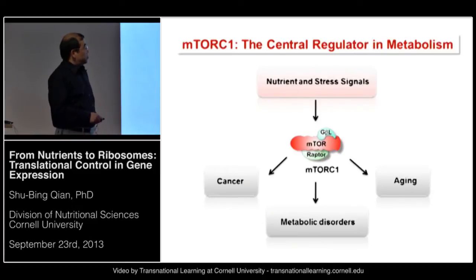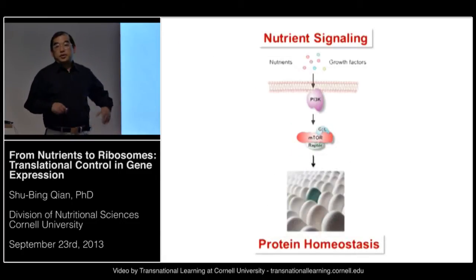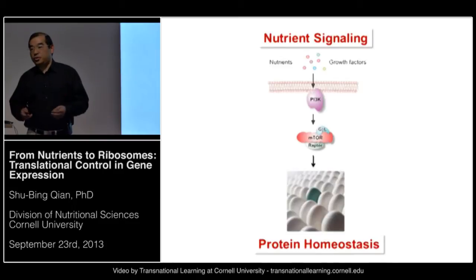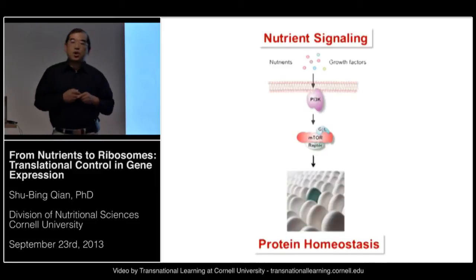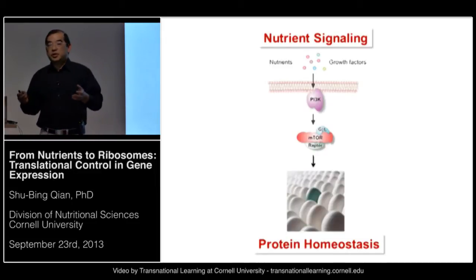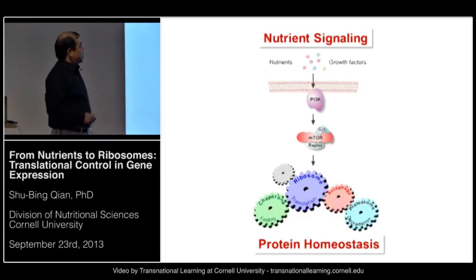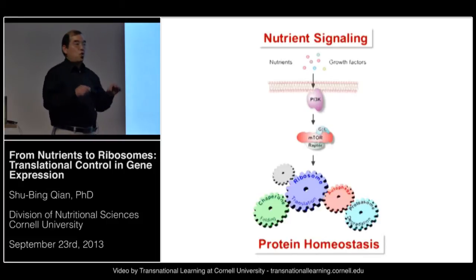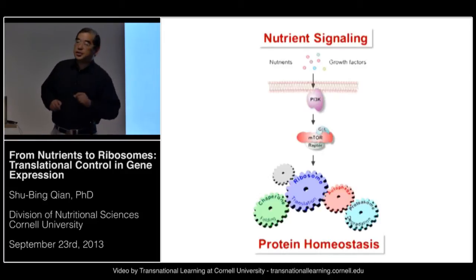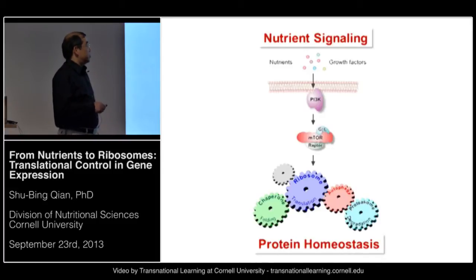There are many downstream targets for the TOR signaling pathway, but we are most interested in protein homeostasis, which consists of protein quality and quantity control. Quantity control determines how many proteins the cell will synthesize, while quality control refers to how good those proteins are going to be. To maintain protein homeostasis, cells develop highly coordinated systems. For example, ribosomes control the quantity — how many proteins are synthesized — and this translation capacity is tightly coupled to cellular energy status and nutrients by the TOR signaling pathway.